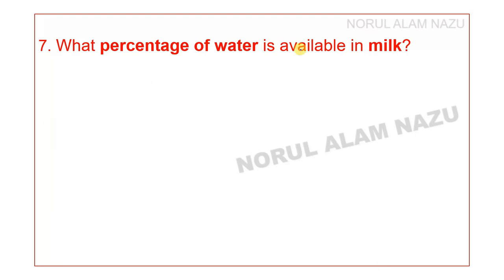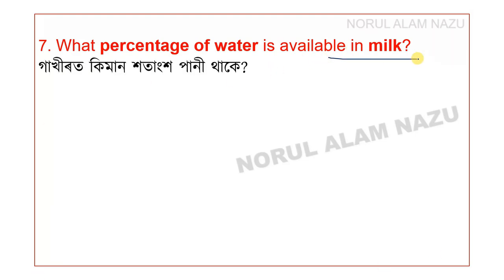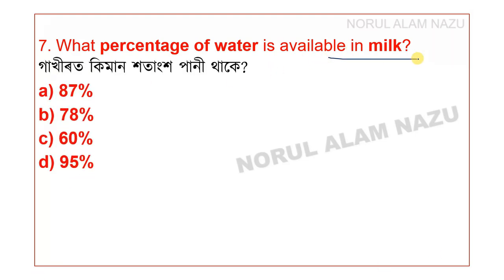The pituitary gland is located at the base of the brain and is about the size of a pea. Question 7: What percentage of water is available in milk? Milk is about 87% water.